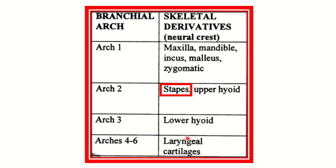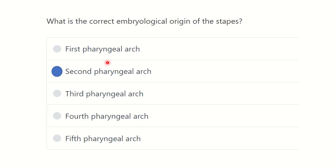From arch three, the lower part of the hyoid bone is derived. From arches four to six, the laryngeal cartilages are derived. So it is now clear that the stapes bone is derived from arch number two, while the other two middle ear cavity bones — the malleus and incus — are derived from arch one.